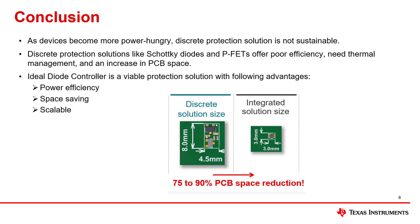With the growing power needs of applications, using discrete protection solutions is not sustainable. They offer poor efficiency, need thermal management like adding a heat sink, and cause increase in PCB space. Ideal diode controllers offer space-saving and scalable solutions to protect your system against reverse voltage or reverse current. These devices significantly reduce the energy typically lost across the forward voltage drop of traditional discrete solutions. With this, we come to the end of this video. Thanks for watching.